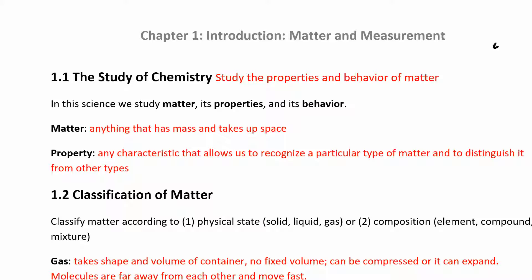In Chapter 1 we're going to look at an introduction to matter and measurement. Chemistry is the study of the properties and behavior of matter. Matter is anything that has mass and takes up space — basically the physical material of the universe: your body, air, clothes, any combination of elements. A property is any characteristic that allows you to recognize a particular type of matter and distinguish it from other types.